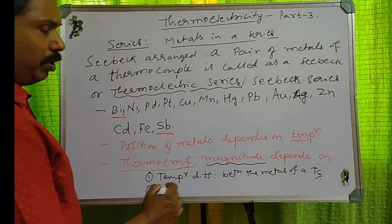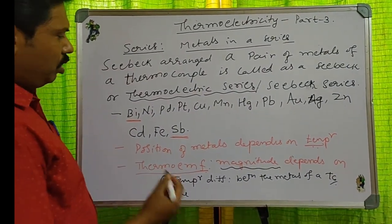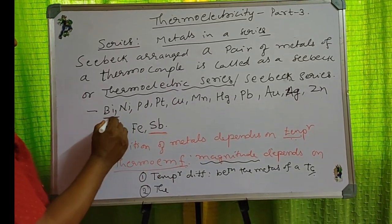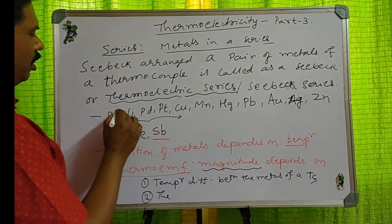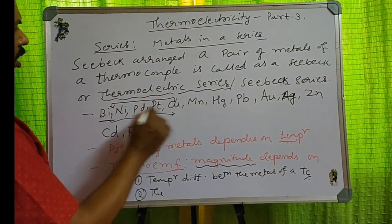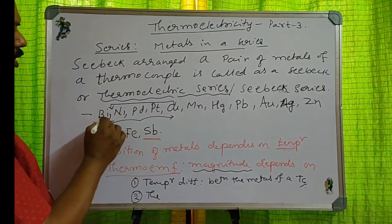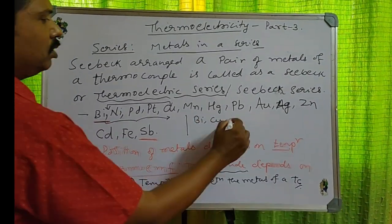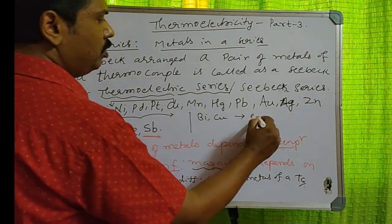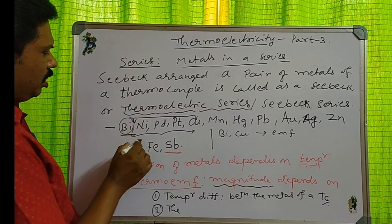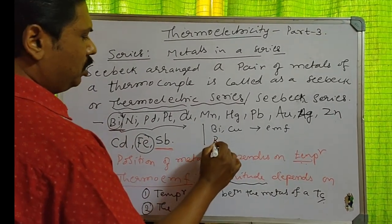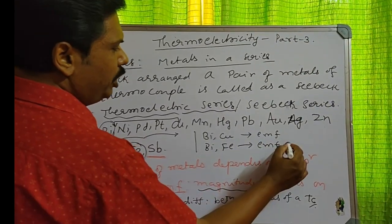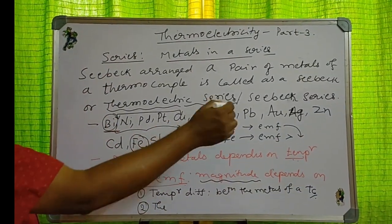The second thing is, the EMF also depends on the position of the metals in the series. The series starts with bismuth, and the next metals follow in order. For example, bismuth and copper are very near in the series, therefore the thermo-EMF developed in the bismuth-copper thermocouple is less. Whereas bismuth and iron are farther apart, so the EMF of the bismuth-iron thermocouple is more compared to that of bismuth and copper.